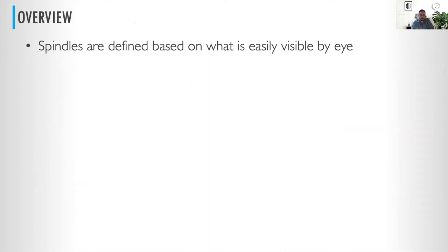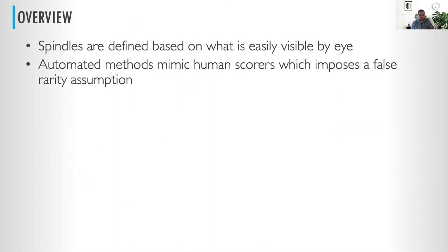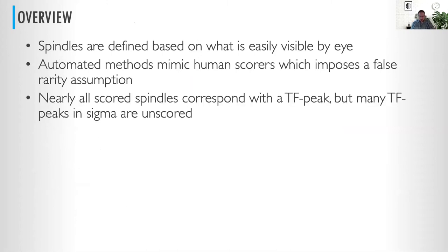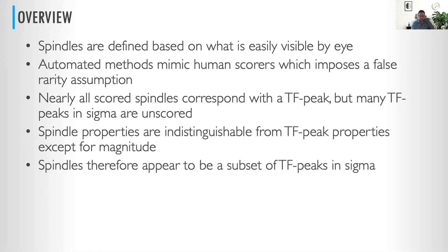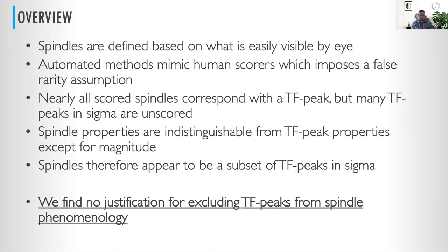In overview: spindles are scored based off of what is easily visible by eye, and automated methods impose a false rarity assumption on the events. Nearly all scored spindles correspond with a TF peak, but not vice versa. The spindle properties are essentially indistinguishable from TF peak properties, except for the magnitude. We can say with fairly good confidence that traditionally scored spindles are therefore a clear subset of the TF peaks we observe in the sigma range.